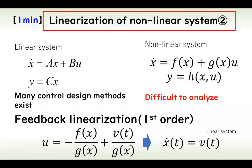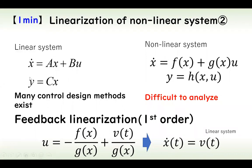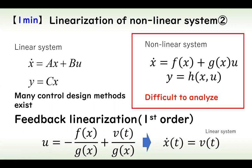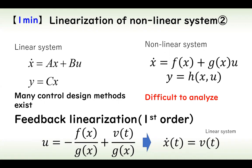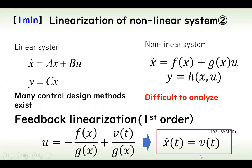Another approach to linearization of nonlinear systems is feedback linearization. For a first-order system, when the feedback input is given in the appropriate form, a linear system can be obtained. For high-order systems, this is known as feedback linearization combined with output zeroing methods.